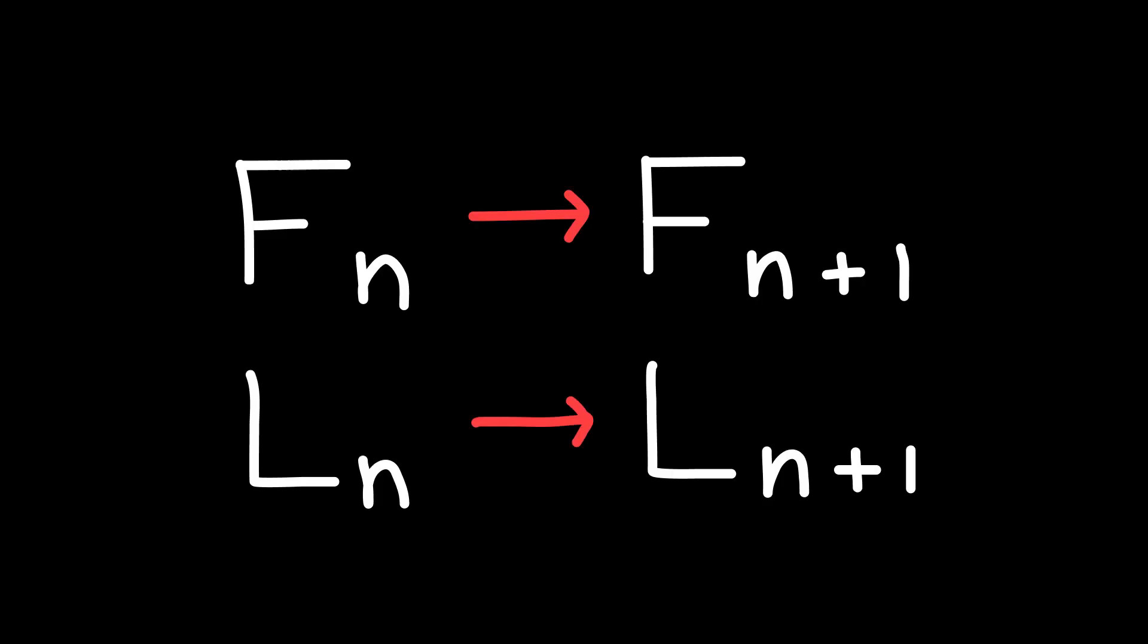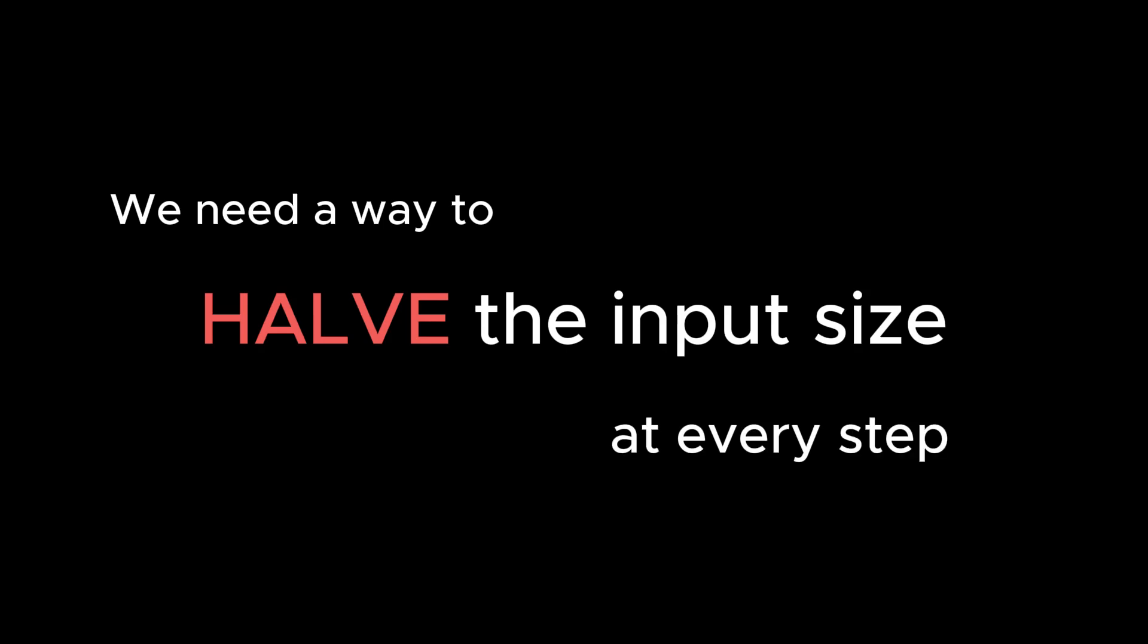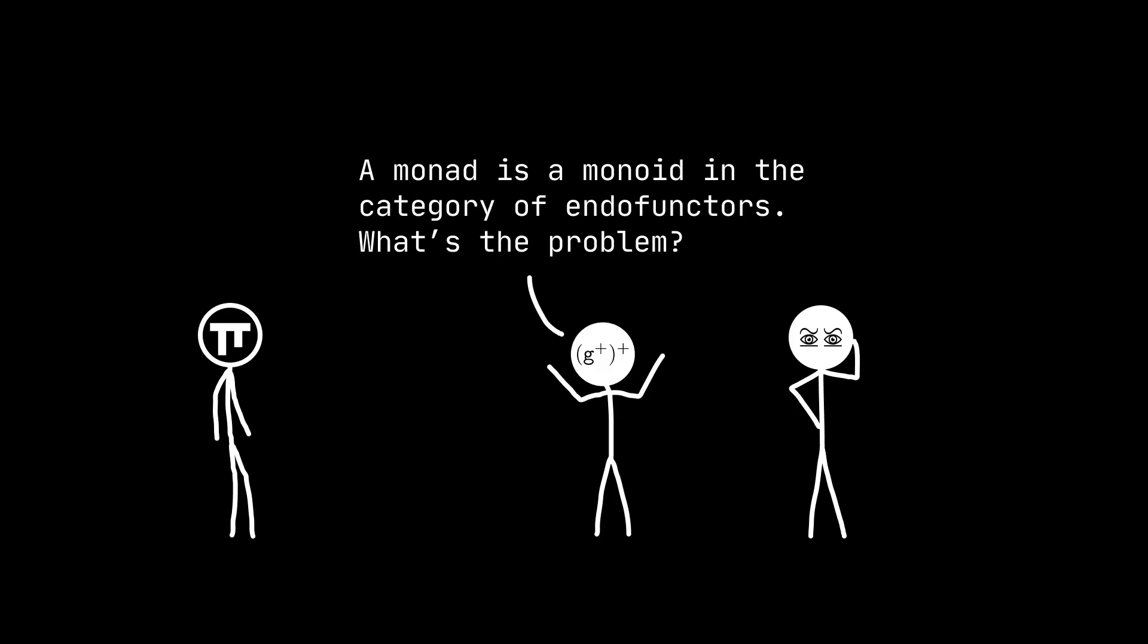Now we have a way to calculate the next numbers in the sequence, but this takes O of n steps like a sliding window algorithm, whereas the matrix method needs only O of log n steps. We need a way to halve the input size at every step to have a chance at beating the math nodes. That's where the next two identities come in. We can find the Fibonacci number at 2n by taking the product of Fn and Ln. For the corresponding Lucas number, we can square Ln and add or subtract 2 depending on the parity of n.